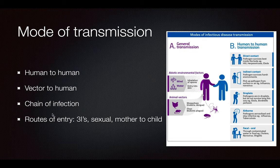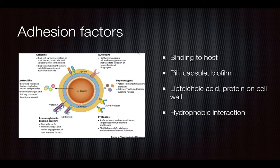The routes of entry are important. They can be sexual, mother-child, inhalation, indirect contact, or airborne — you should know these. Adhesion factors are going to be on the bacteria in order for it to bind to the host epithelium. These can either be the pili, the capsule, and the biofilm.